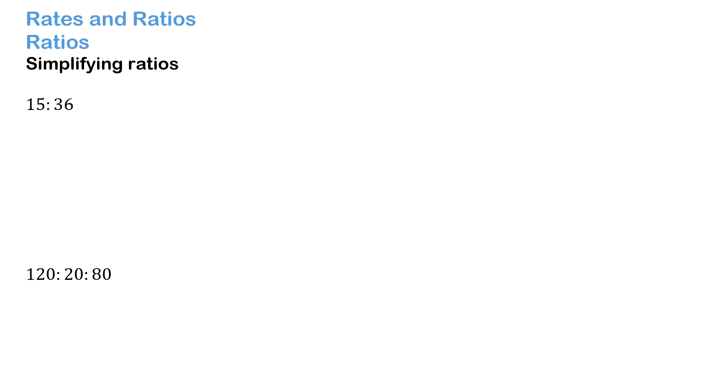When you're trying to simplify ratios, the first thing you look for is what we call the highest common factor, or the biggest number that goes into both the 15 and the 36. In our case, the biggest number that can equally go into 15 and 36 is 3. So we need to divide both our terms by 3. So 15 divided by 3 and 36 divided by 3. Our simplified ratio is going to be 5 to 12.